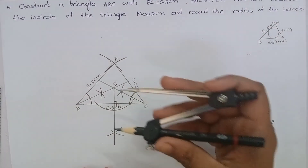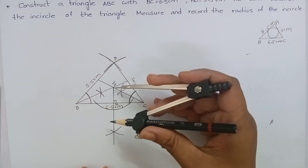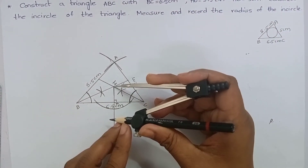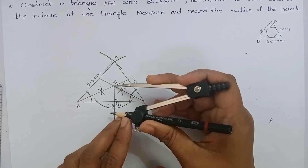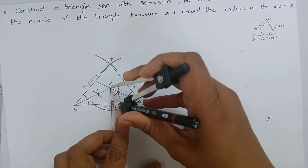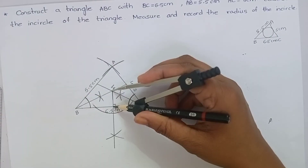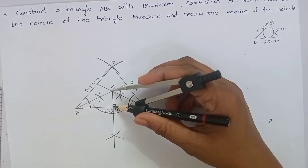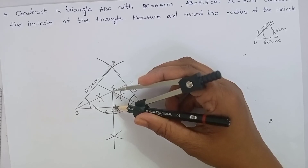Now, keeping IN as radius, draw a circle. Look at this carefully — keeping IN as radius, draw a circle.